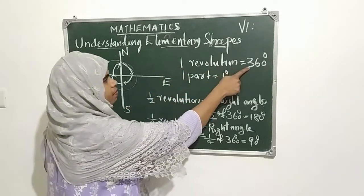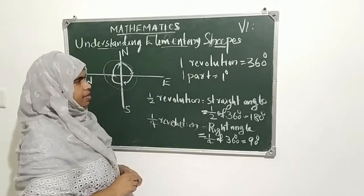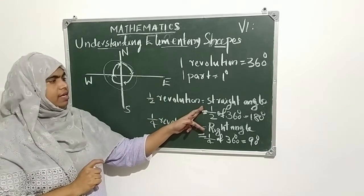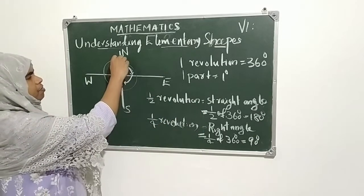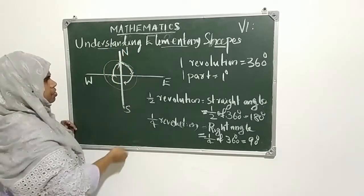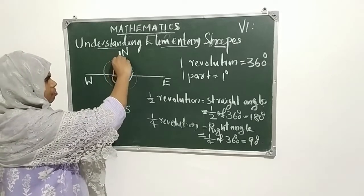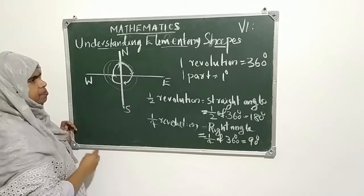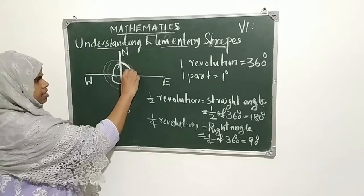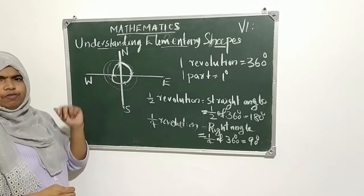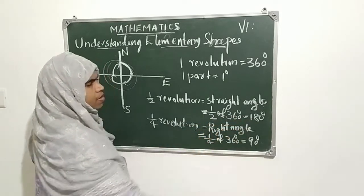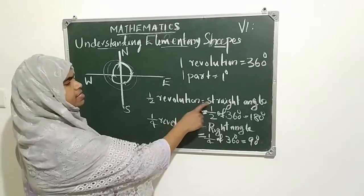One complete revolution is 360 degrees. Half revolution equals a straight angle. This is half revolution — half of 360 degrees, that is 180 degrees. 180 degrees means a straight angle.